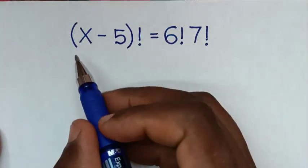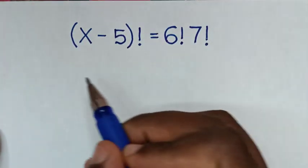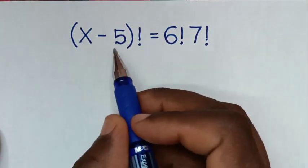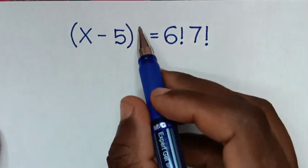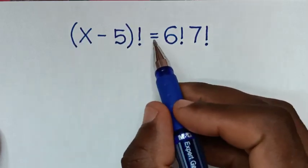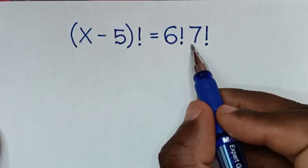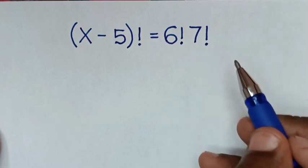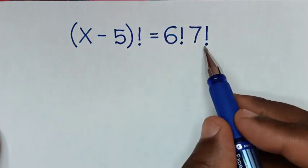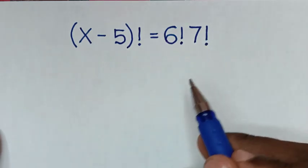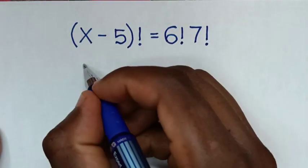Hello, you are welcome to solve this math problem which is (x minus 5) factorial is equal to 6 factorial times 7 factorial, to find the value of x from this equation. Now from here on the left side it is (x minus 5) factorial.